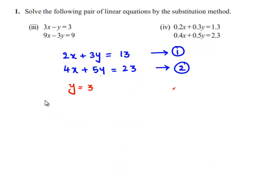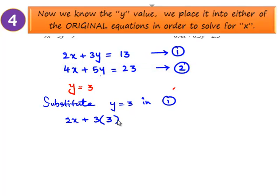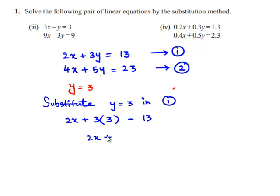Now, let us substitute y = 3 in equation number 1. We will be getting 2x + 3 times 3 = 13. 2x + 9 = 13. 2x = 13 - 9, and 2x = 4. That implies x = 4/2, which is nothing but 2.